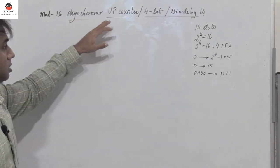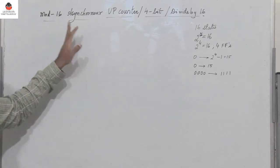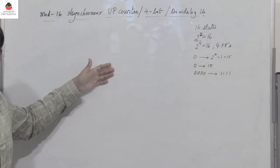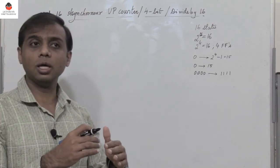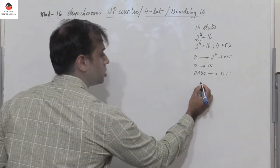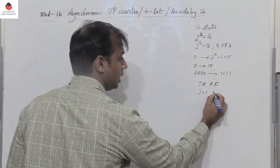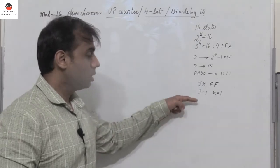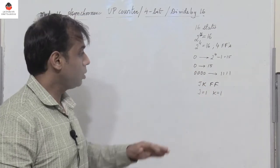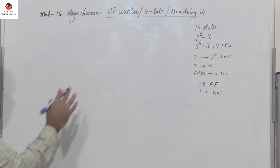To design this mod 16 asynchronous up counter, I will use JK flip-flops — 4 JK flip-flops in total. Since it is asynchronous, all four flip-flops do not share a single clock. Instead, the output of the first flip-flop is the clock input to the second, and the output of the second is the clock input to the third, and so on. All flip-flops are negative-edge triggered. With J=1 and K=1, the flip-flop toggles on each negative edge.